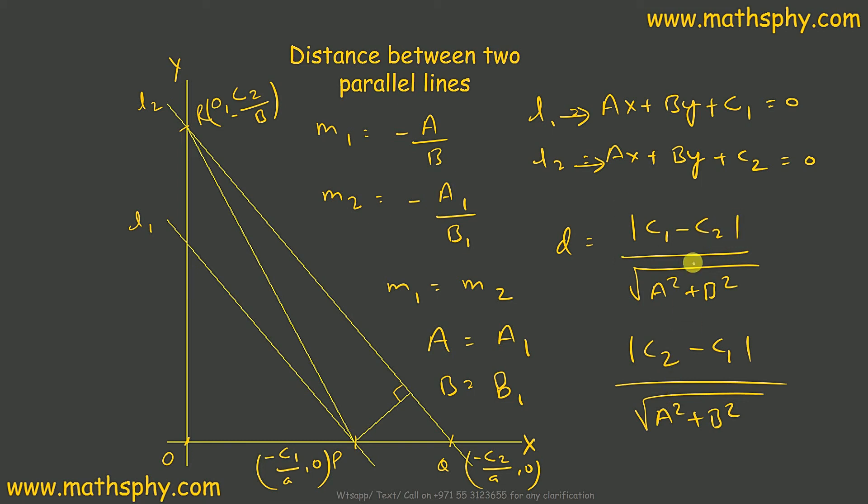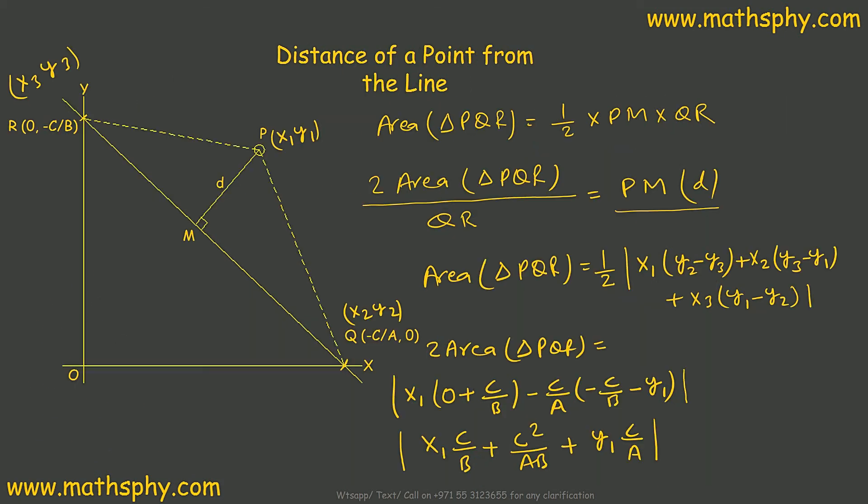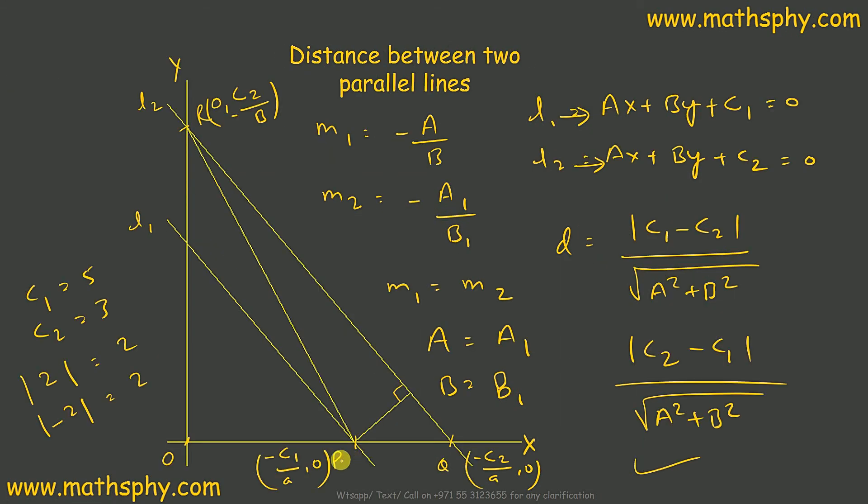If you get c2 minus c1 within the modulus or c1 minus c2 within the modulus, both answers are correct. If I take an example, suppose c1 is 5 and c2 is 3. In the modulus, c1 minus c2 will give you 2, c2 minus c1 gives you negative 2, but ultimately the absolute value is 2 for both because they are in the modulus.